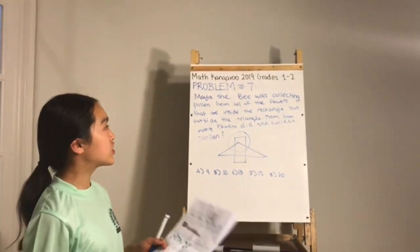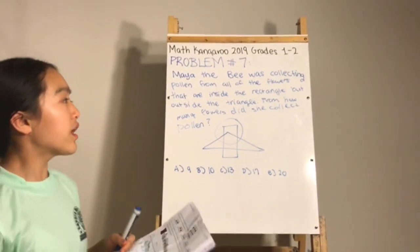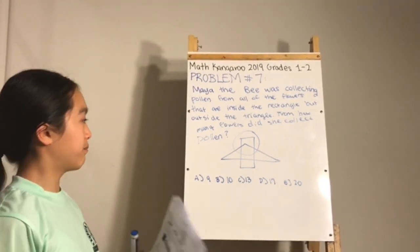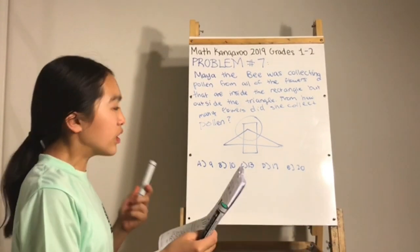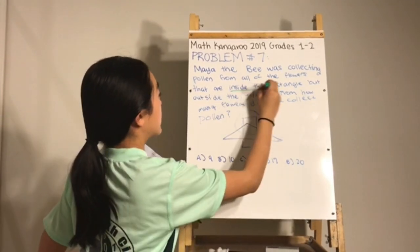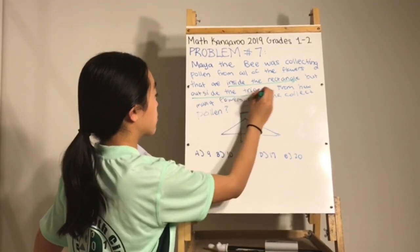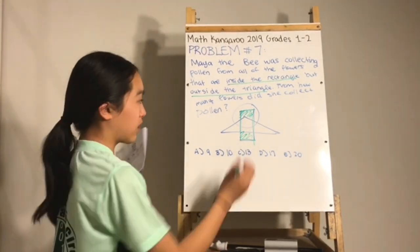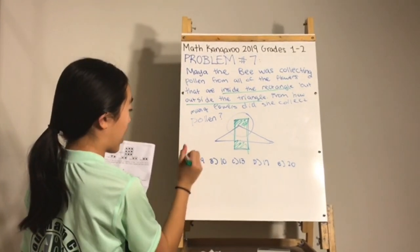Problem number seven: Maya the bee collected pollen from all flowers inside the rectangle but outside the triangle. Focus on the region that is inside the rectangle but outside the triangle — those two regions together contain a total of nine flowers in the diagram.